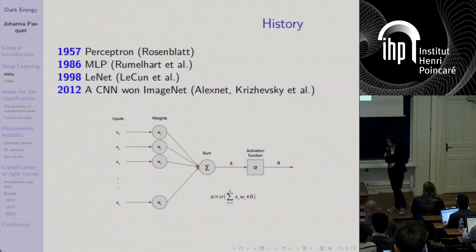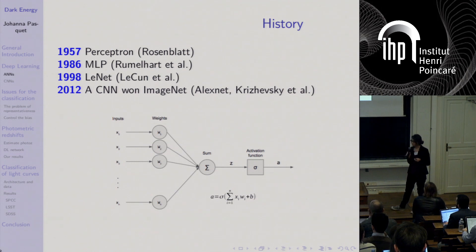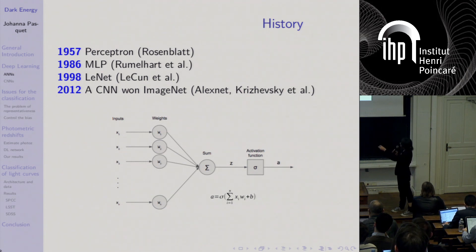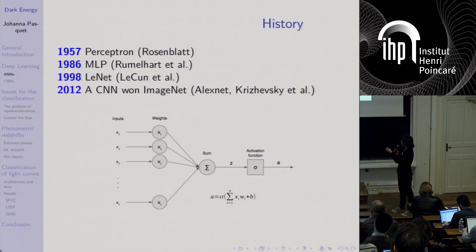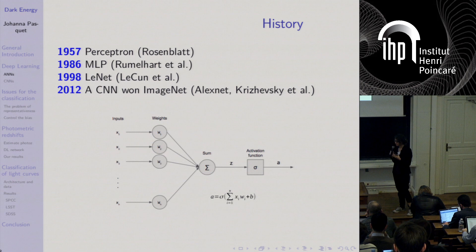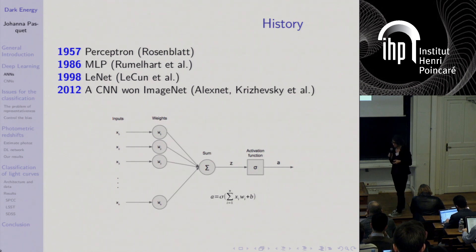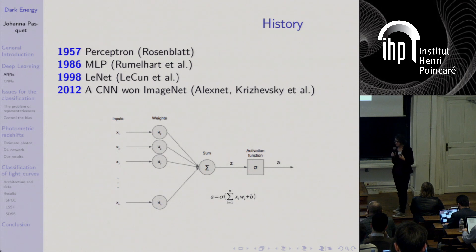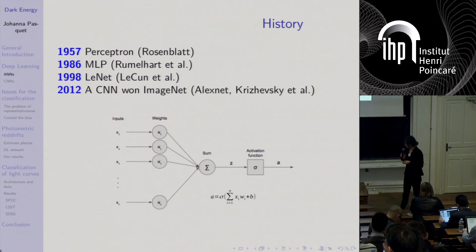To give some important dates: in 1957 the perceptron was developed. It is a simple architecture with inputs X and weights W, computing a scalar product between input and weights, then applying a function to produce an output. This architecture can solve main linear problems. A more complex architecture based on different layers with several neurons — the multi-layer perceptron — was developed and can solve nonlinear problems by introducing non-linearity.